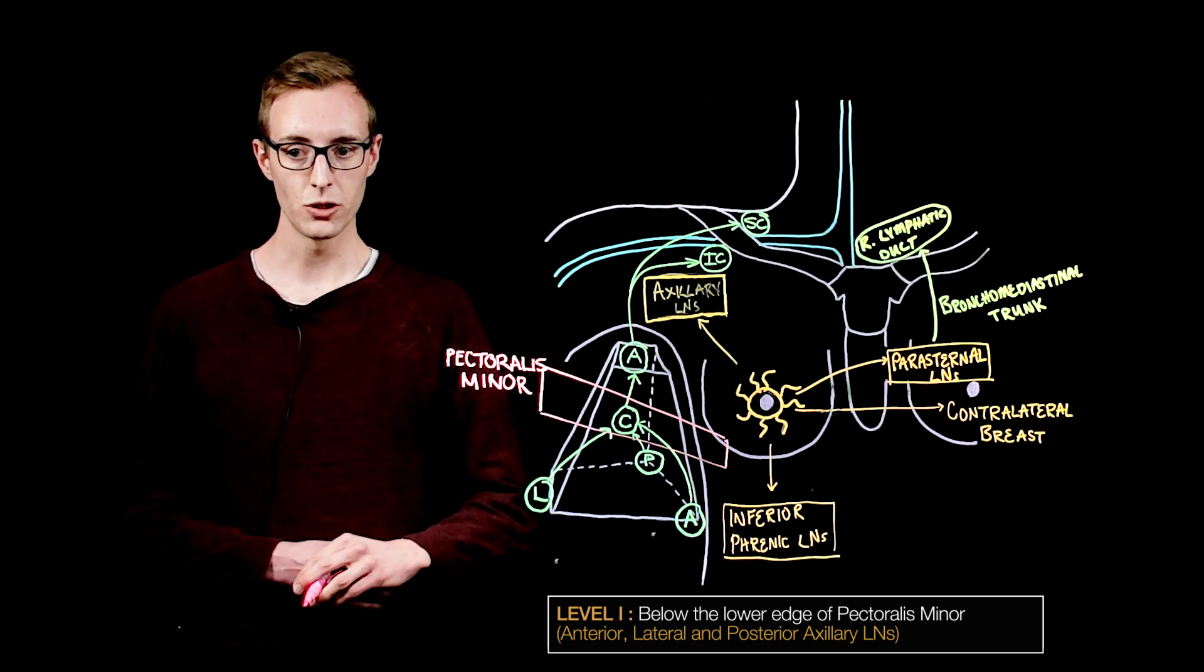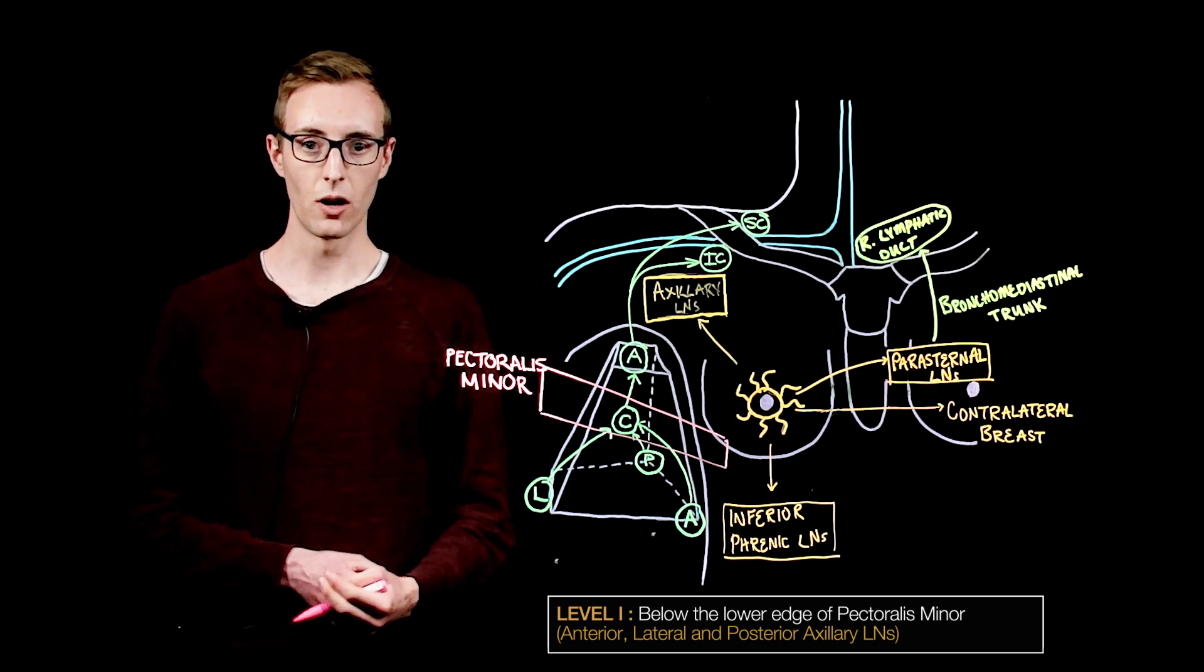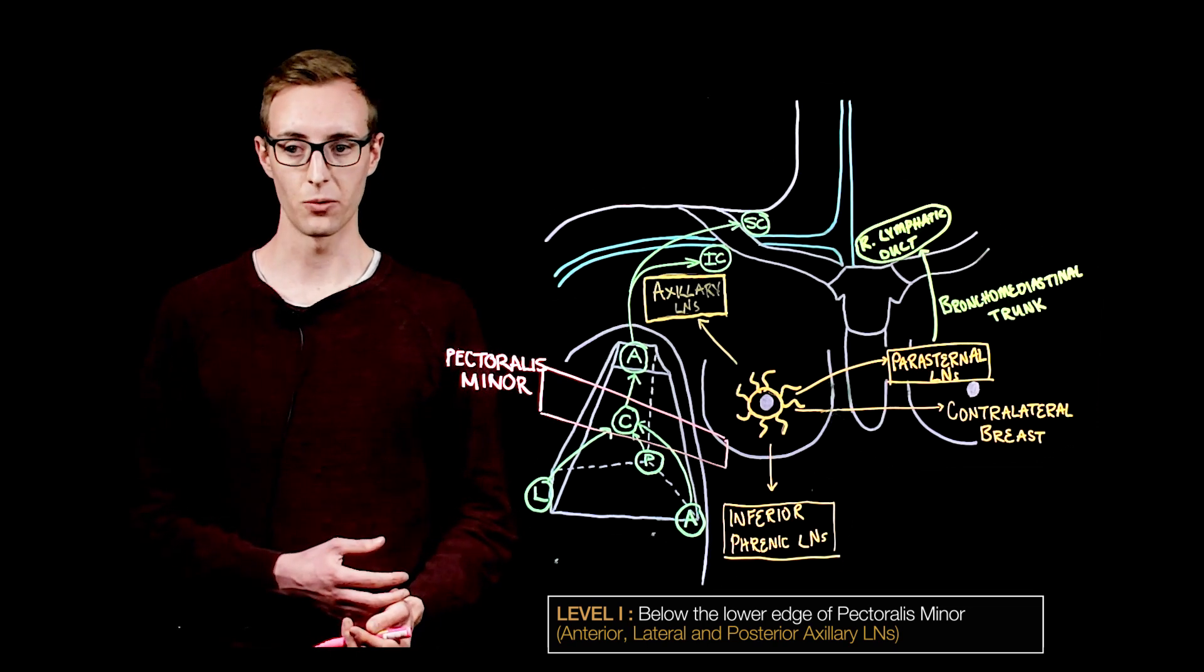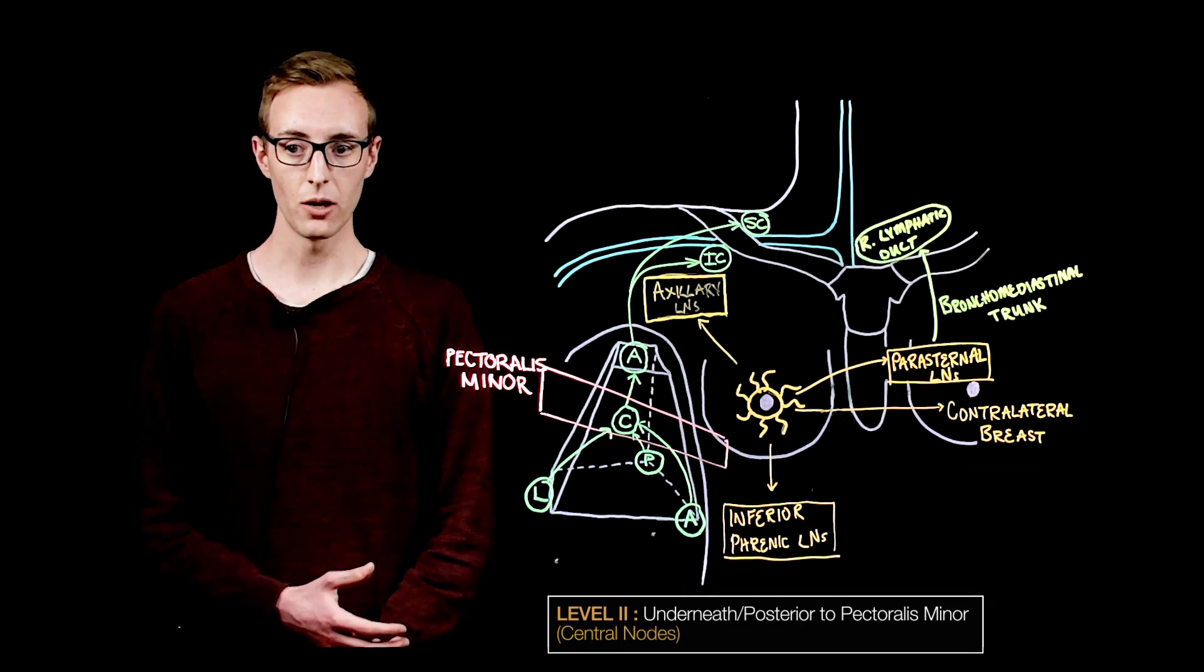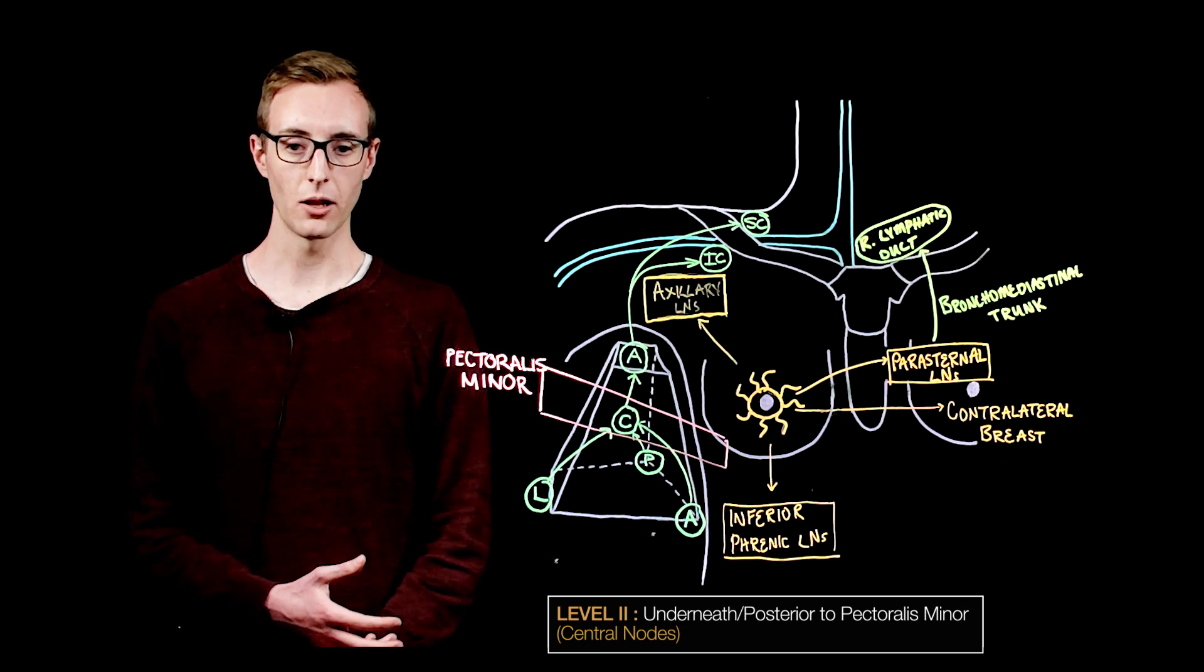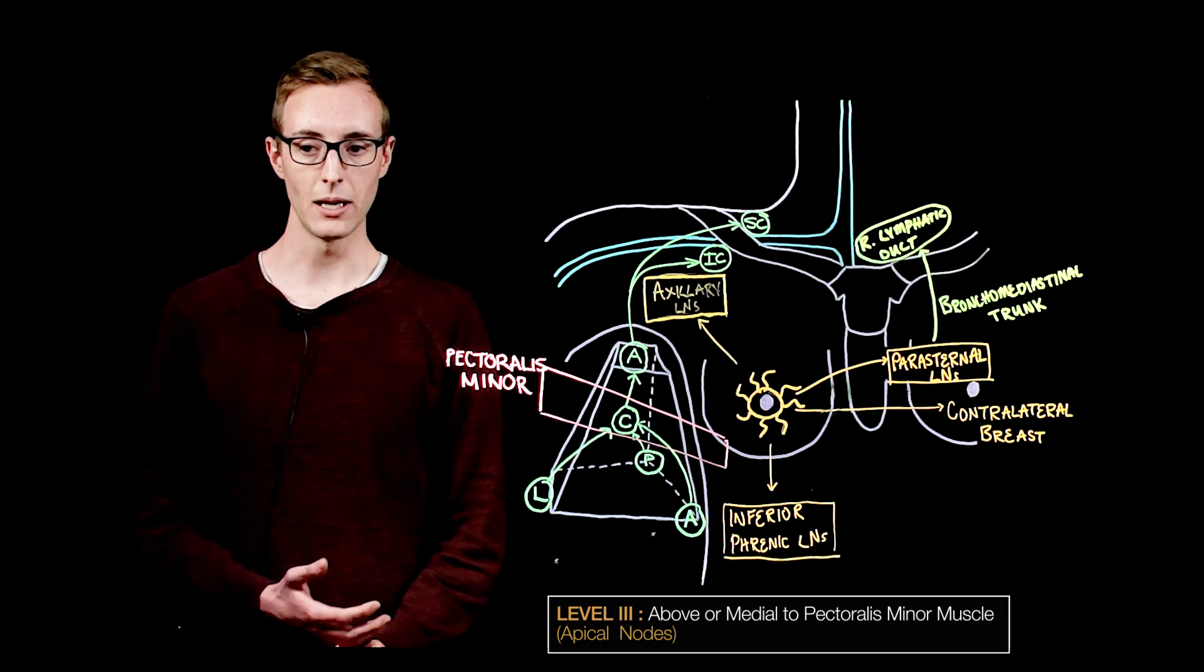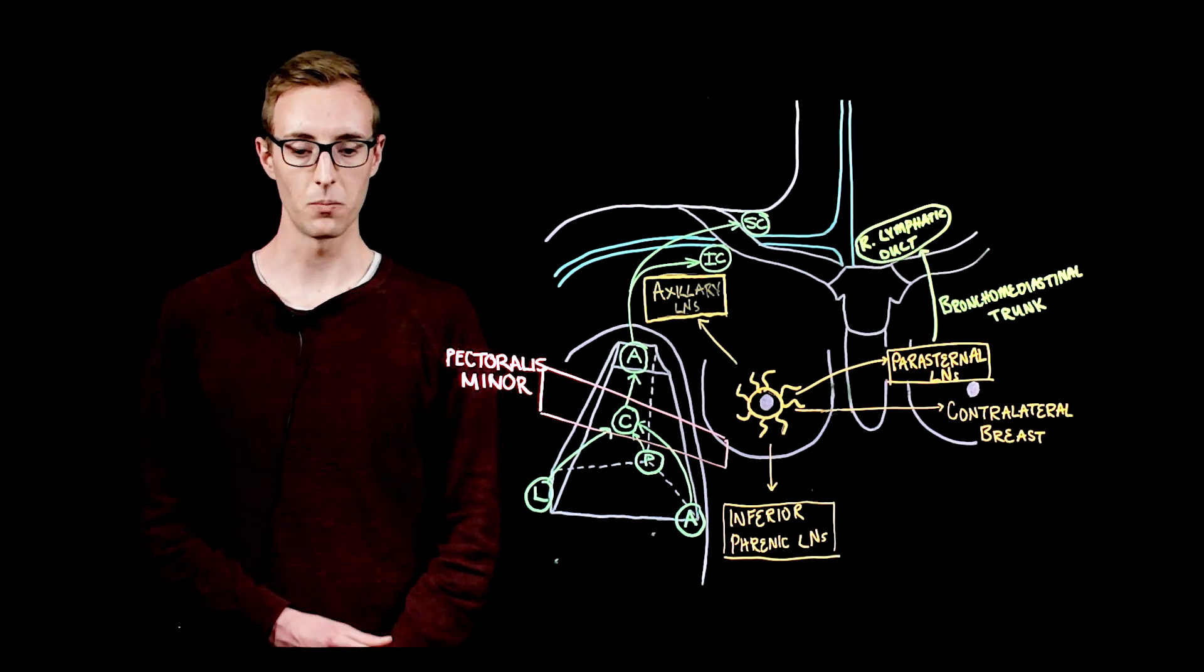Level one nodes sit lateral to or inferior to the lateral border of pectoralis minor and include the anterior, posterior and lateral groups. Level two nodes sit posterior or deep to pectoralis minor and include the central nodes and the apical nodes form level three which sits superior to or medial to the upper border of pectoralis minor.